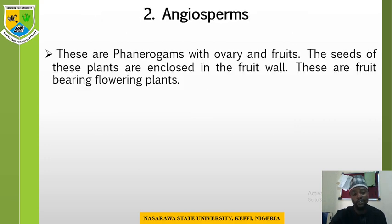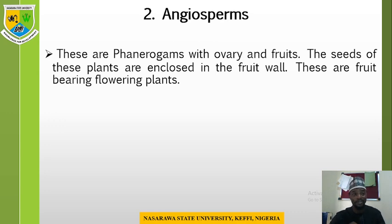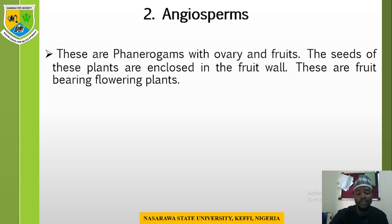The second division is the angiosperm. These are phanerogams with ovary and fruit; they also bear seeds, but their seeds are enclosed in the fruit. For example, if you want to see the seed of a mango, you have to first get the fruit and split it before you can see the seed inside. So these are fruit-bearing flowering plants — apart from seeds, they also bear fruit.